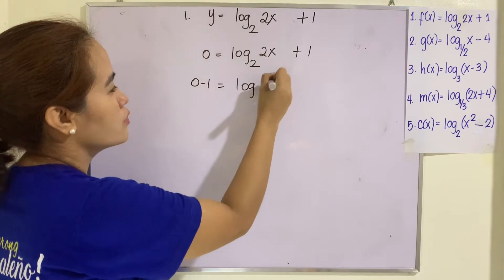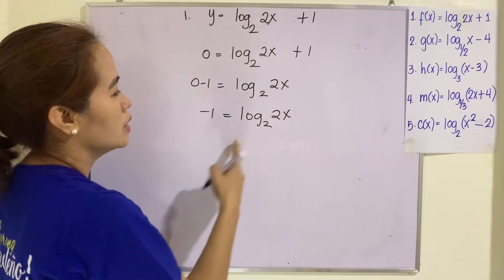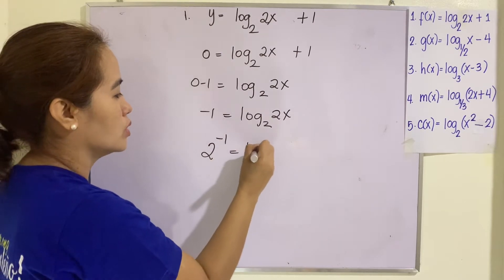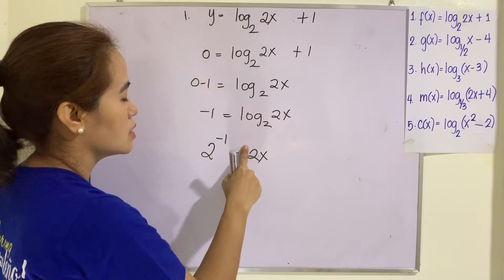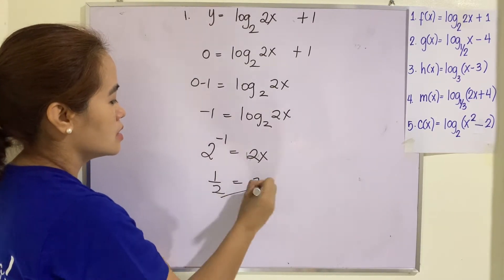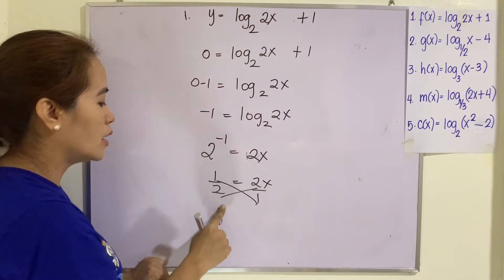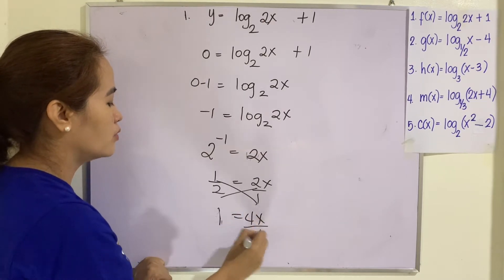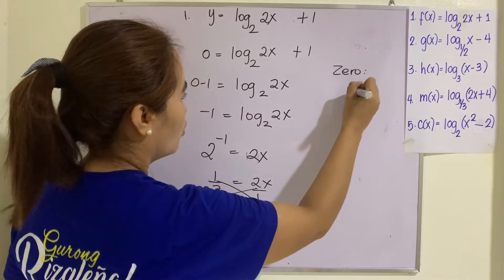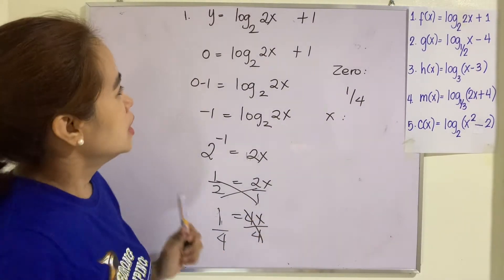Transpose this one to the other side: log of 2x to the base 2 equals negative 1. Change this into exponential: 2 raised to negative 1 is equal to 2x. This gives one half equals 2x, so 1 equals 4x, divided by 4 on both sides. Our zero here will be one fourth.